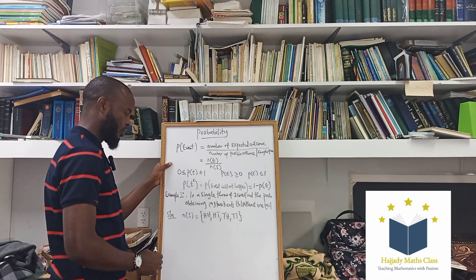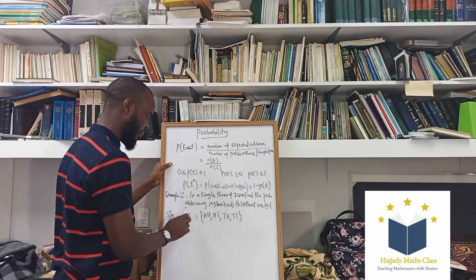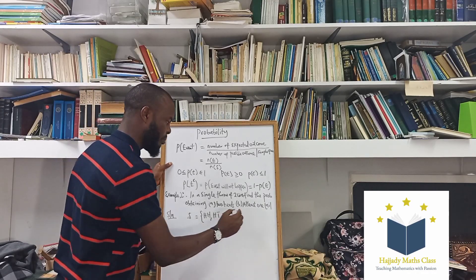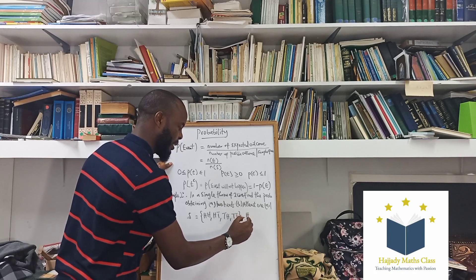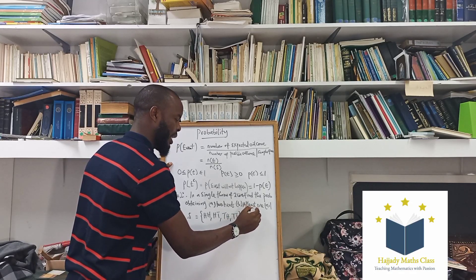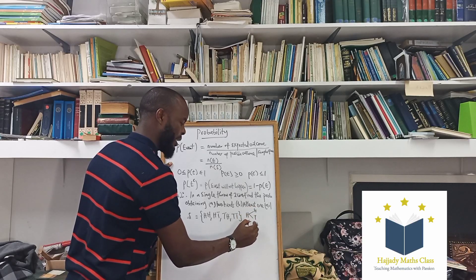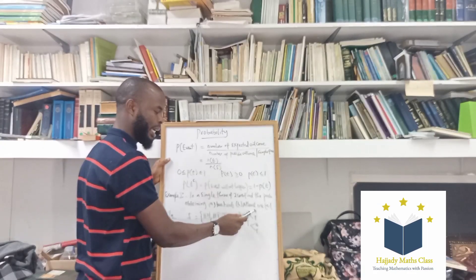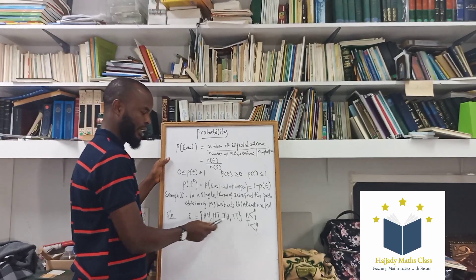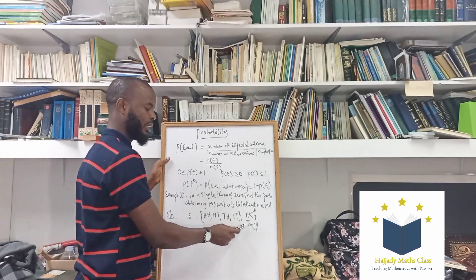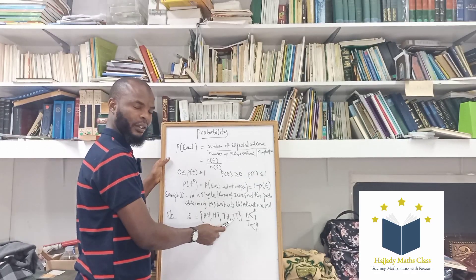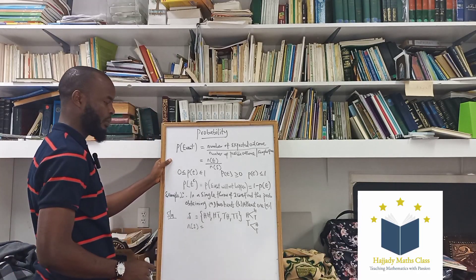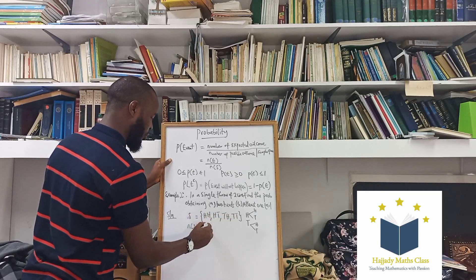Another way of getting your sample space is by using a tree diagram. Start with heads and tails; on each branch you can have heads or tails again, giving you HH, HT, TH, TT. The cardinality of the sample space — how many values do we have? One, two, three, four. Four total outcomes.